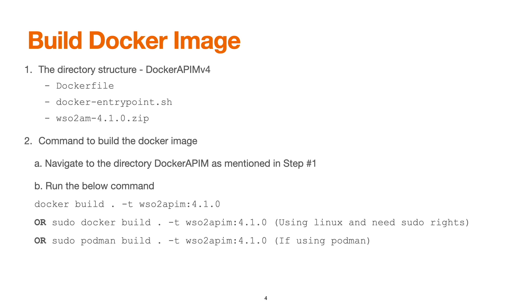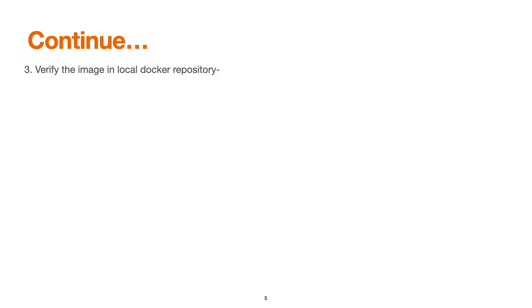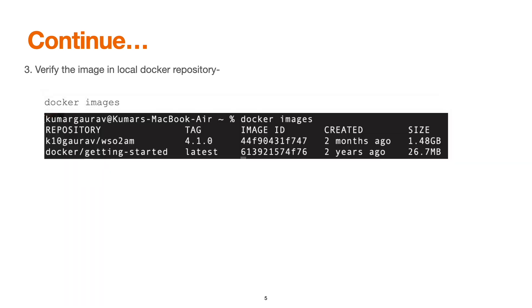To verify the image, run the command 'docker images'. Once we run the command, we will see a screen showing the repository section indicating your local or remote repository information, the tag number, the image ID, and the creation date followed by the size.